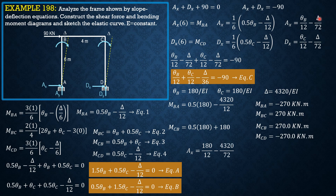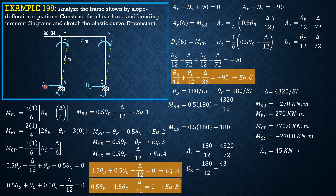The actual value of AX is theta_B over 12 minus 4020 over 72, giving AX equals 45 kN. Since this is negative, it acts leftward. DX is also 180 over 12 minus 4020 over 72, which is also negative, so DX also acts leftward at 45 kN.